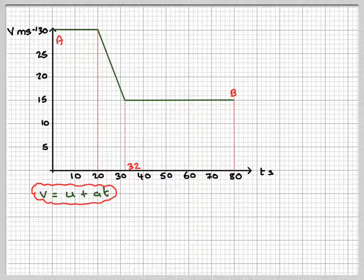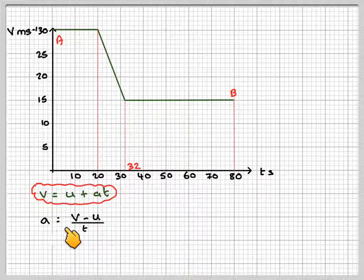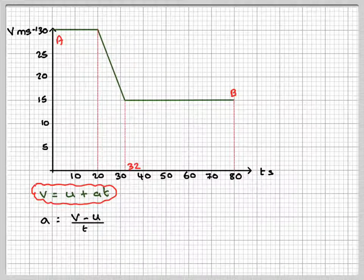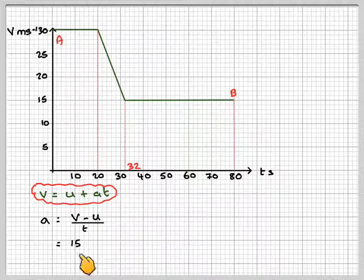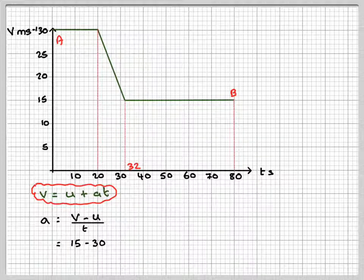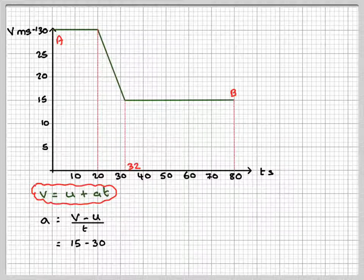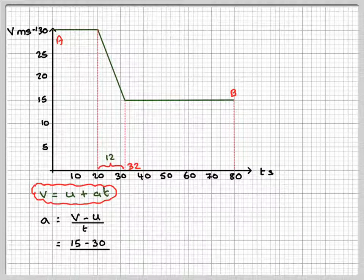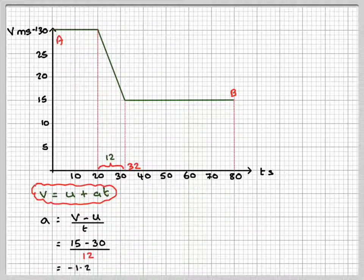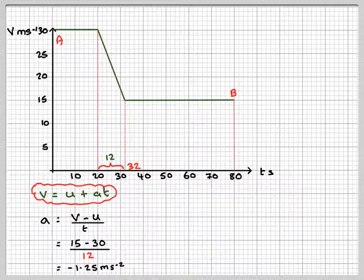Using V is equal to U plus AT, the acceleration will be the final velocity minus the initial velocity divided by T. The final velocity was 15 or speed and the initial speed was 30 and divided by the time. The time is 32 minus 20 which is 12 and that gives minus 1.25 meters per second squared.